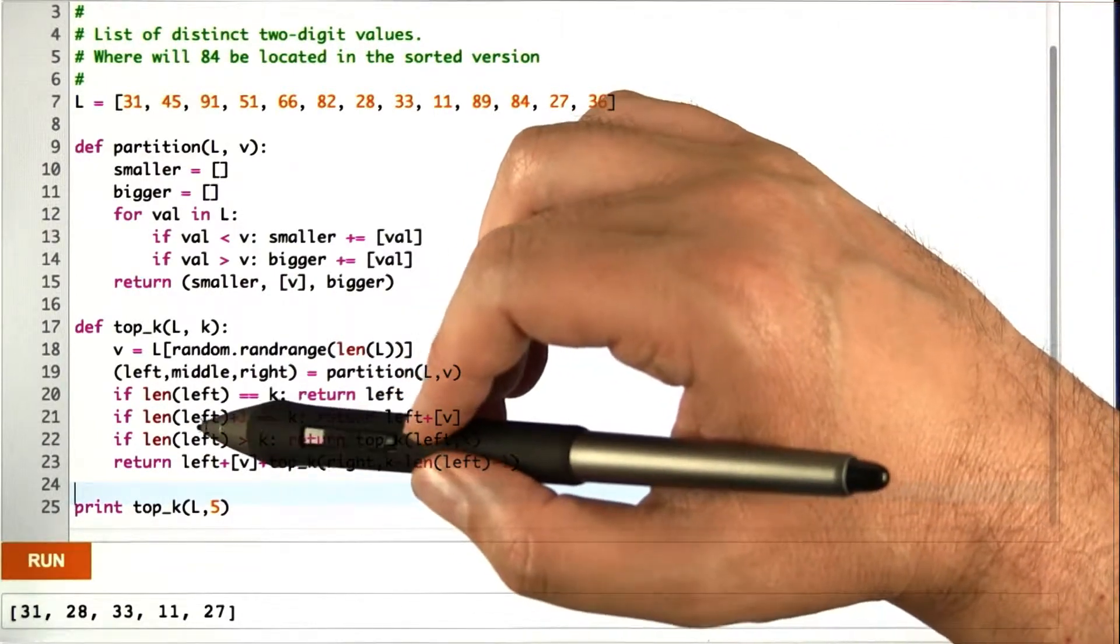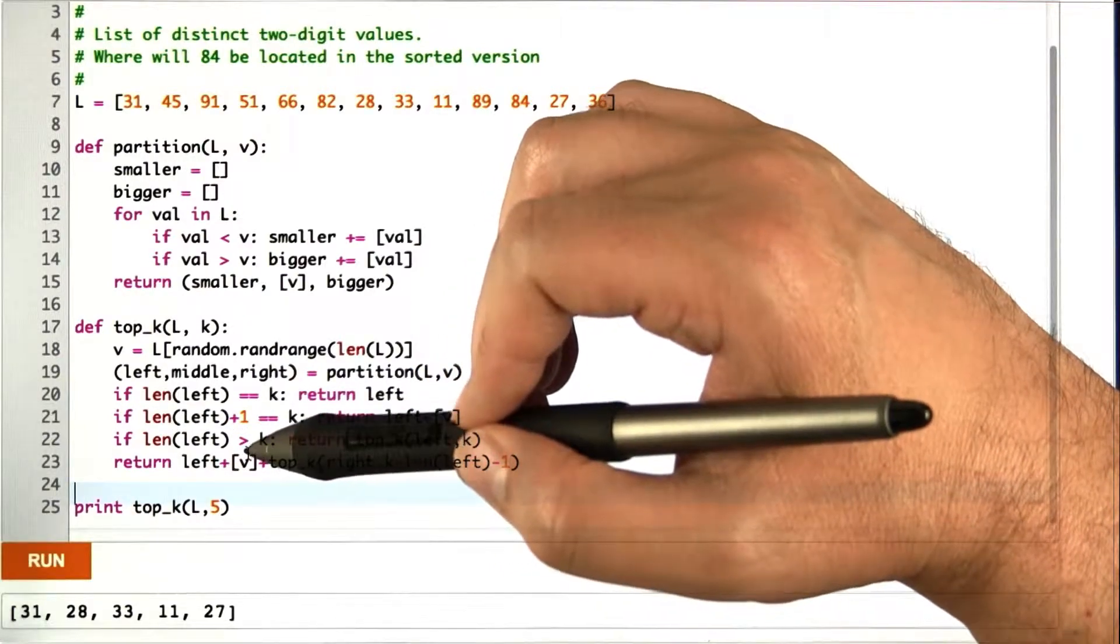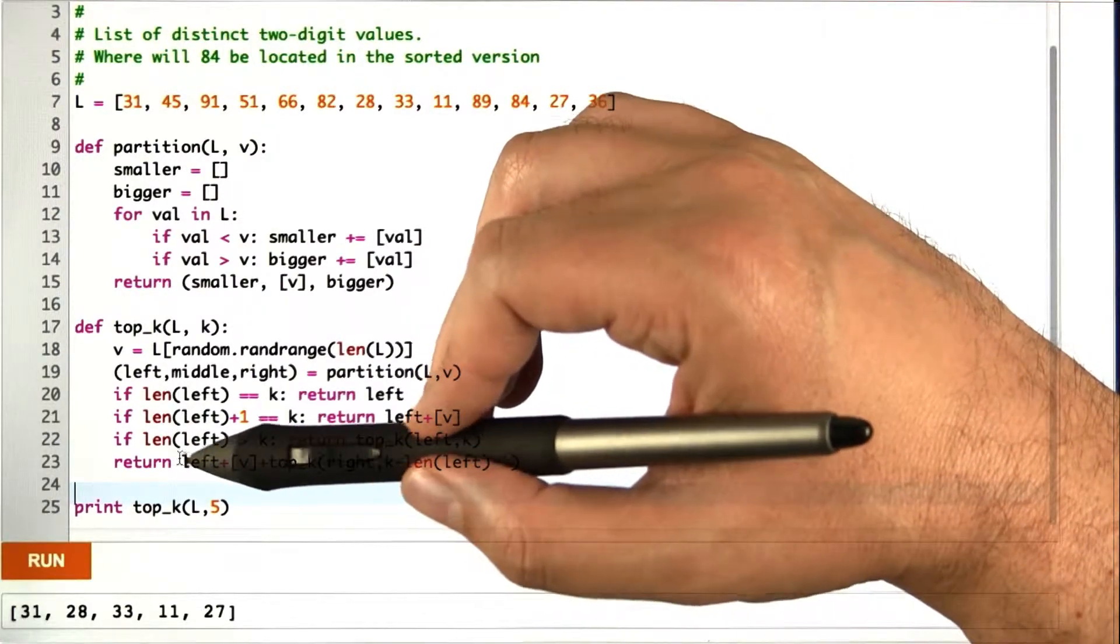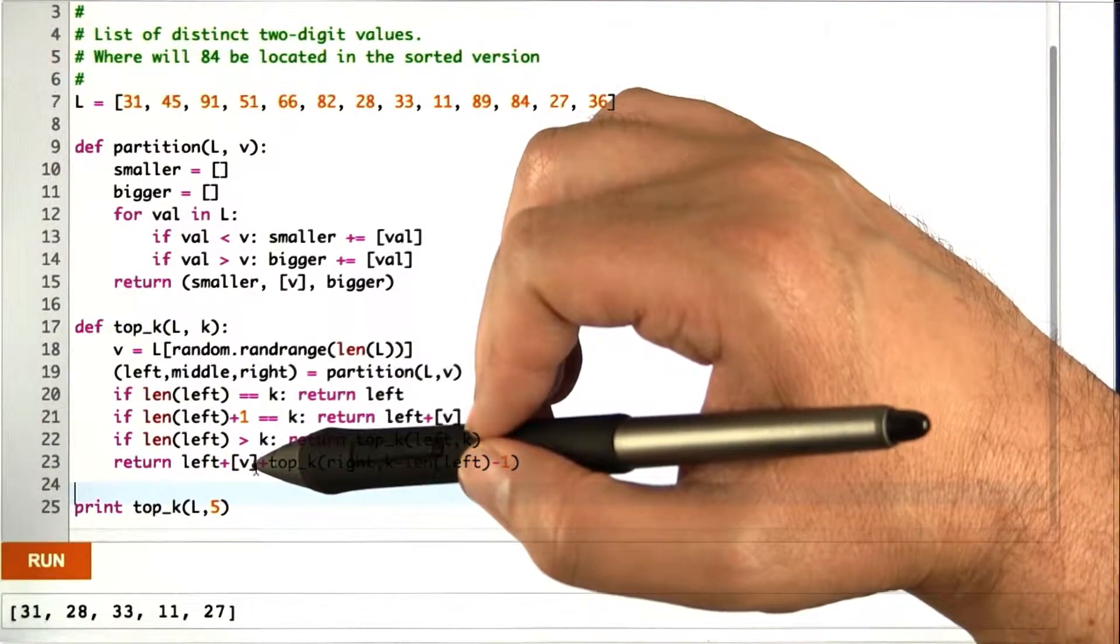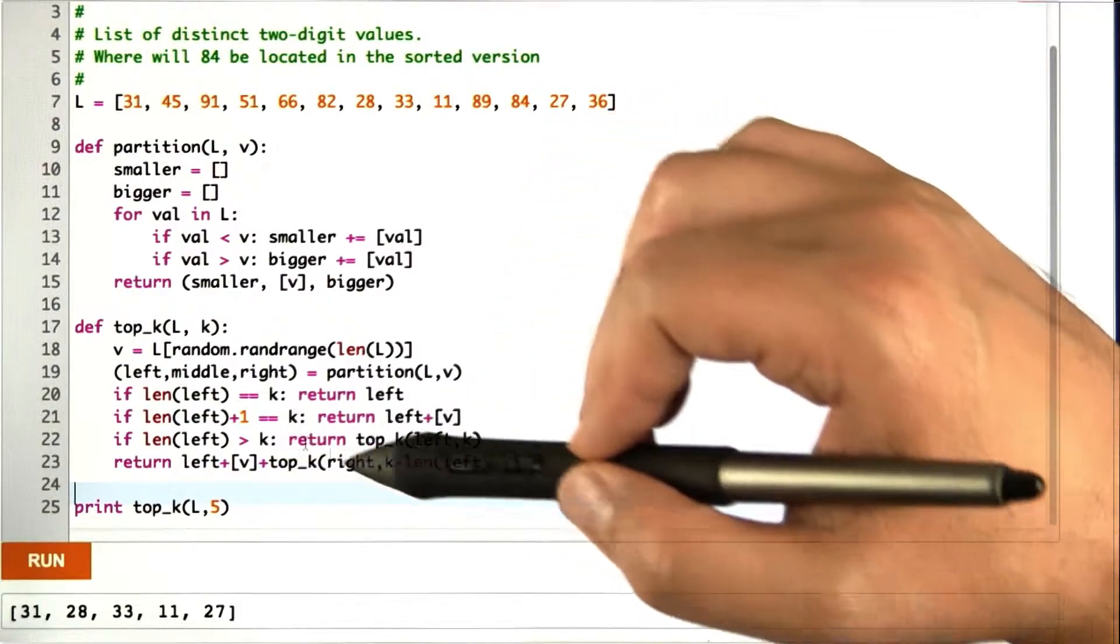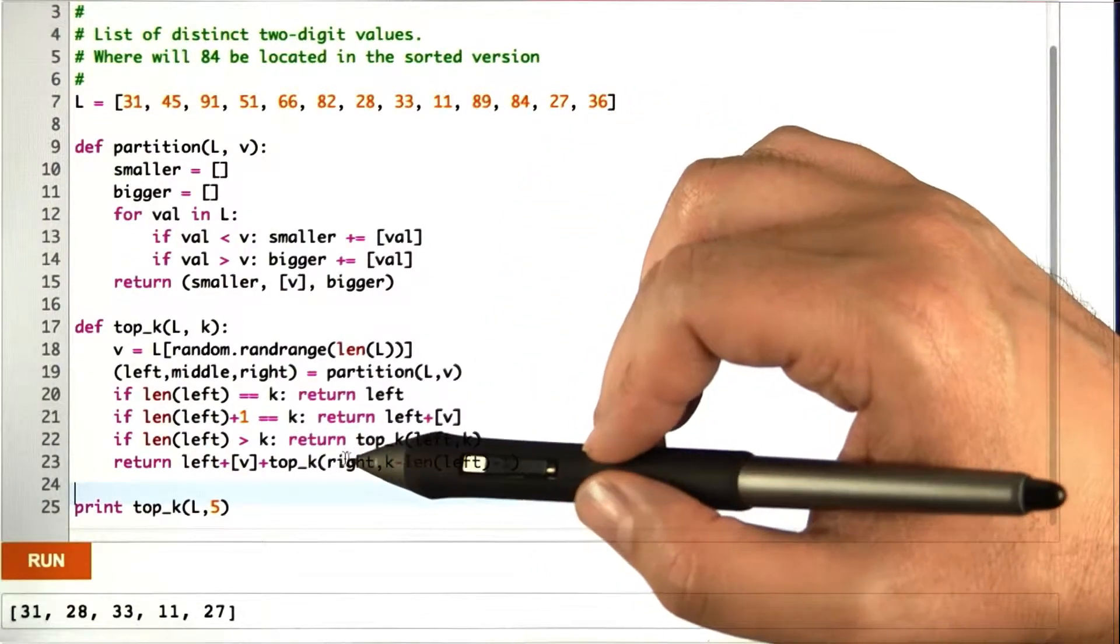And finally, in the last case, the length of left is smaller than k. So we know that everything on the left is something that we want. It's part of the top k. And we know v itself is also part of the top k. But we need to search for the rest, and all the rest of the ones that we want are on the right.